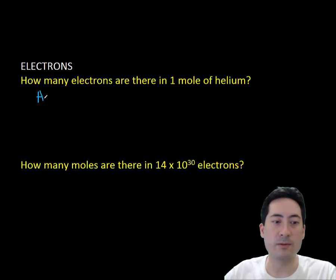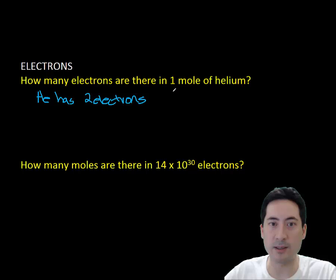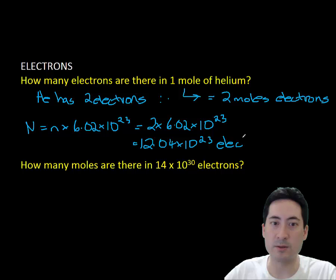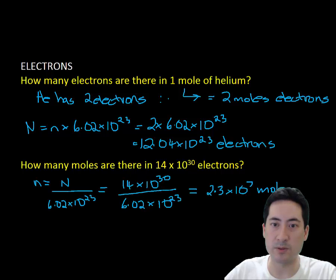Now moving into the more trickier ones with the electrons, this could potentially trick you up if you can't count out the electrons correctly. This problem is much easier because it's just helium with two electrons, and so 1 mole of helium has 2 moles of electrons. So you times that out, you get 12 by 10 to the 23 electrons. Working the other way, the number of moles is 2.7 moles of electrons.